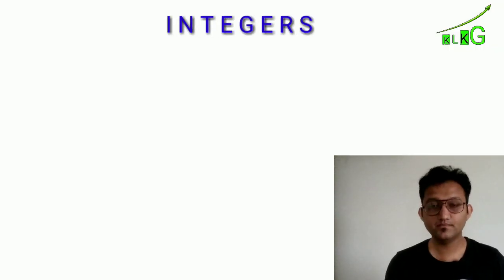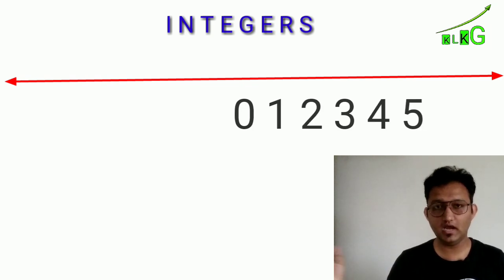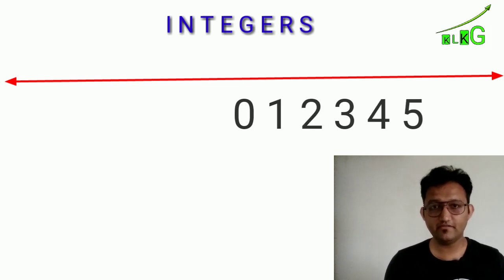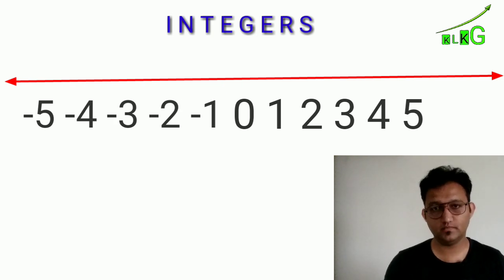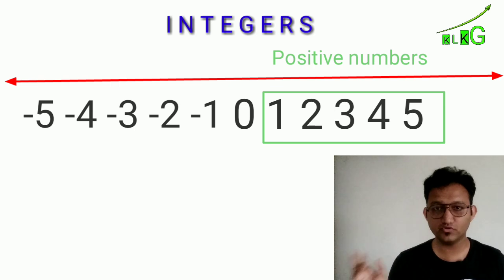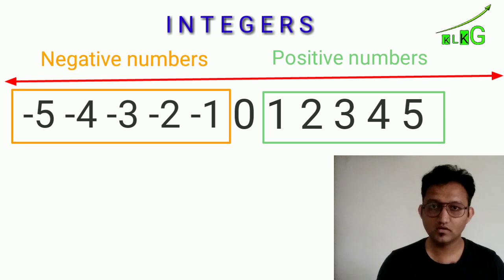Integers can be represented on a number line: 0, 1, 2, 3 and so on, and on the left side minus 1, minus 2, minus 3 and so on. 1, 2, 3 and so on are positive numbers and minus 1, minus 2, minus 3 are negative numbers. Zero is neither positive nor negative.